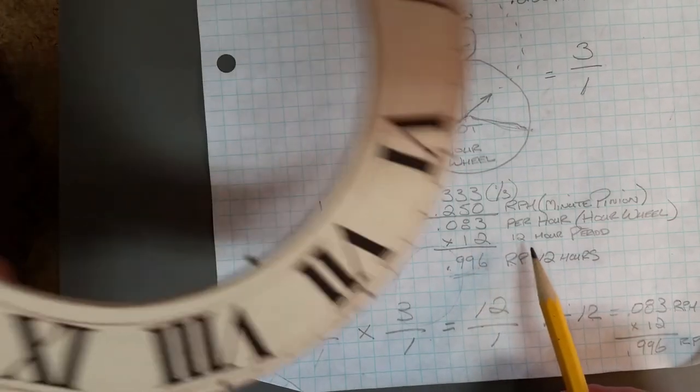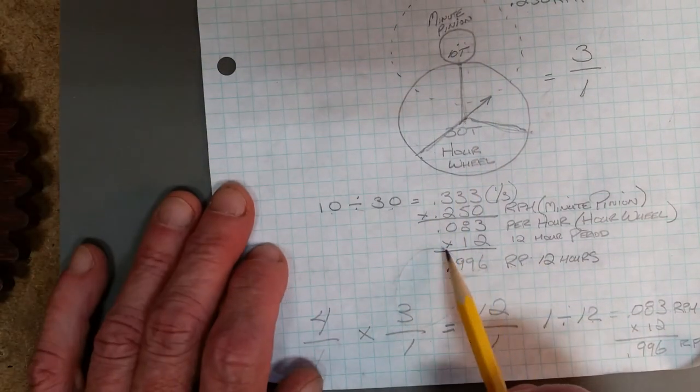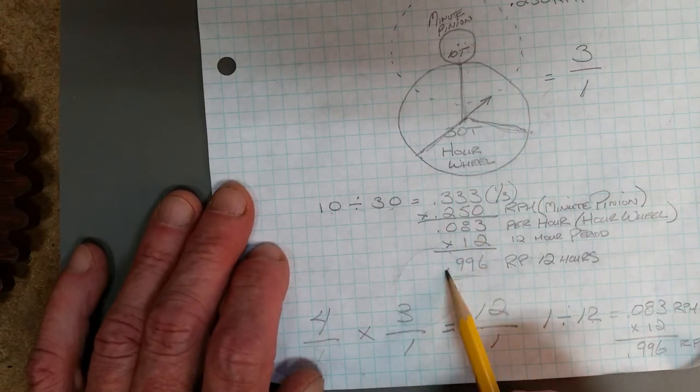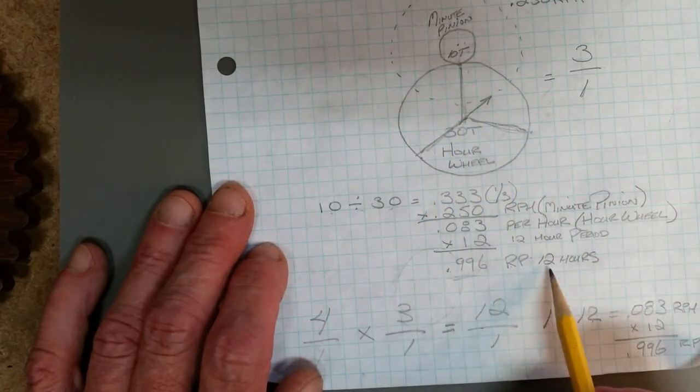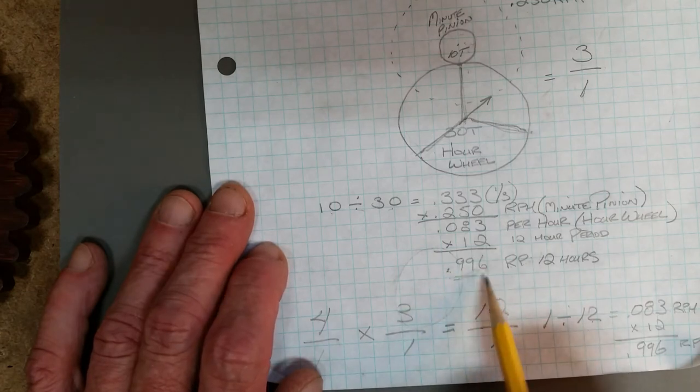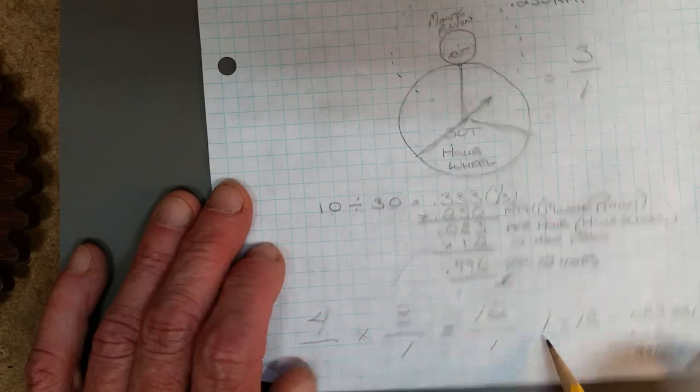It's important to note how many increments are on a dial, which is twelve. We multiply that 0.083 by twelve, we get 0.996. So that would be the revolution of this wheel in a twelve hour period. 0.996 is virtually one—one revolution per twelve hours and that's what we want.